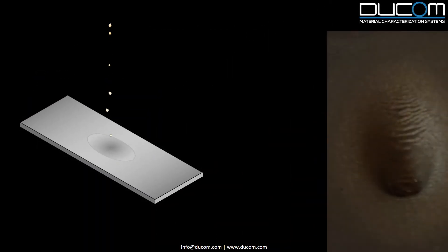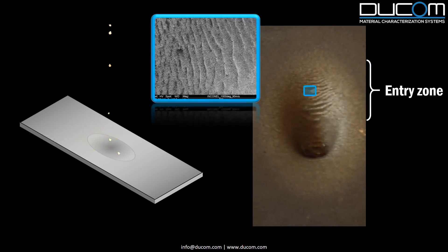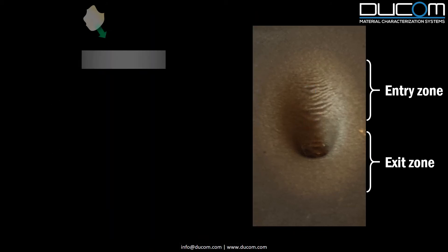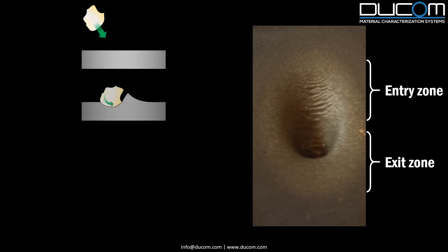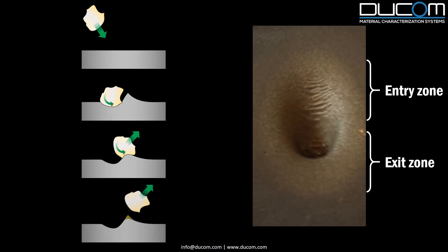Ripples were observed on these specimens at an entry zone and they disappeared over the travel path, leading to material removal and then surface smoothening. These ripples were the result of particle impact that led to plastic deformation and lip formation, followed by cutting of these lips due to particle rotation.